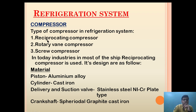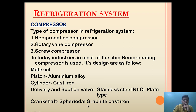The types of compressors used in a refrigeration system are: first, a reciprocating type compressor; second, a rotary vane compressor; and third, a screw type compressor. In most of today's industry, the reciprocating type compressor is used. The materials used are: pistons made of aluminium alloy, cylinder is of cast iron, and the delivery and suction valves are made of stainless steel nickel-chromium plate — to give roughness and toughness, and to allow quick and large volume operation. The crankshaft is made of spherical graphite cast iron to withstand high fatigue stress.